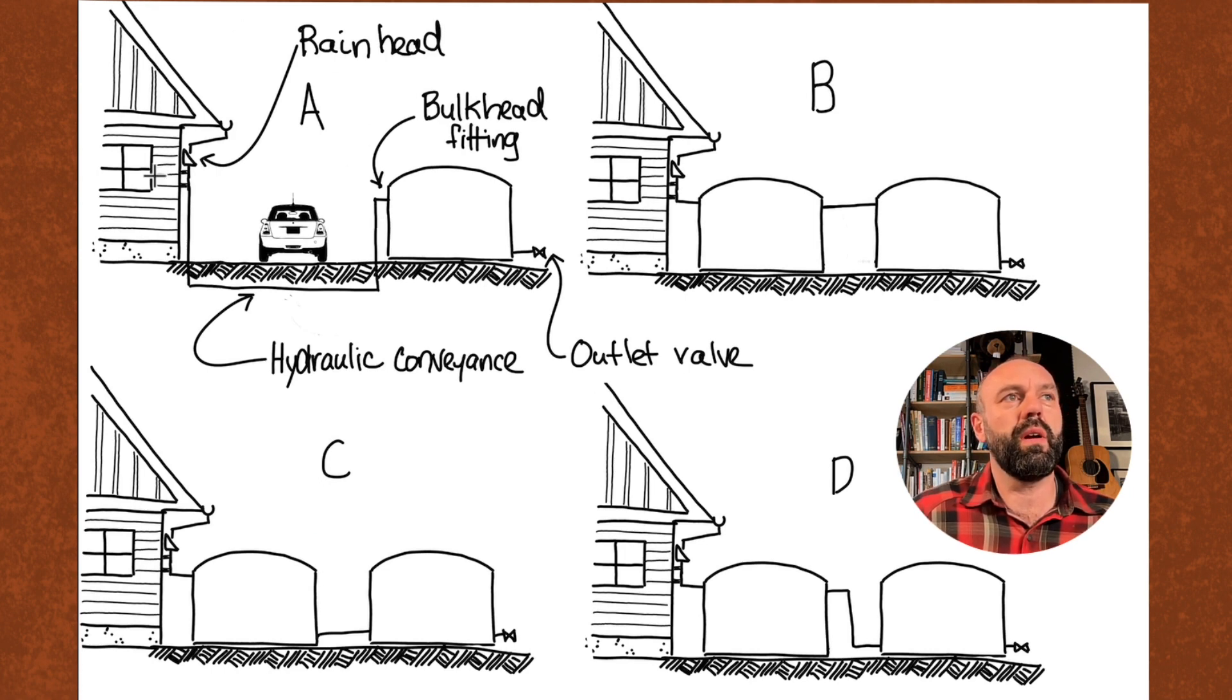In scenario A, this is what we would refer to as a hydraulic conveyance system. Water is collected off the roof, goes through the gutter down into a rain head, which is basically just a screened inlet that prevents bugs and debris from coming into the water. It then goes straight down underground through a pipe, and as long as the inlet in the tank is lower than the inlet on the rain head, the water will push its way through without a pump, which is kind of cool.